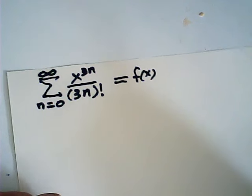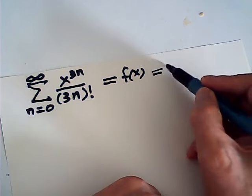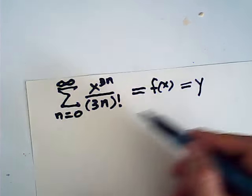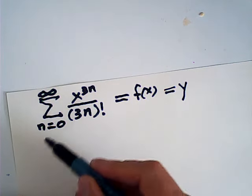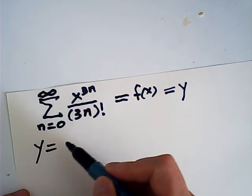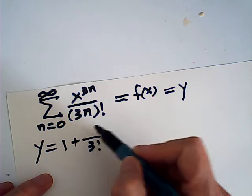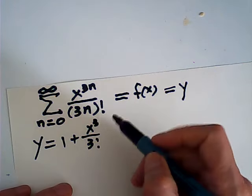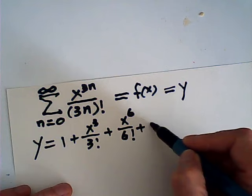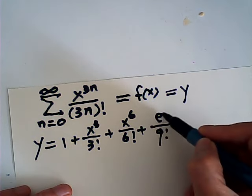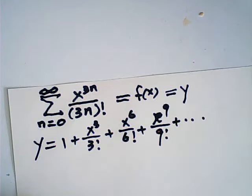It's not easy to do — it's very complicated. Let me use y to stand for f of x, just to make it easier to write the steps. Then y equals 1 (the first term) plus x cubed over 3 factorial, plus x to the sixth over 6 factorial, plus x to the ninth over 9 factorial, and so on. So that's the series.